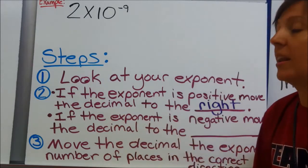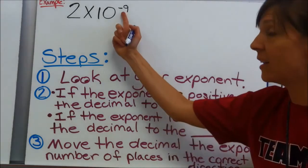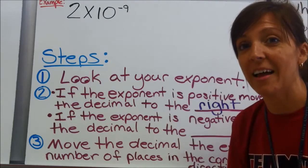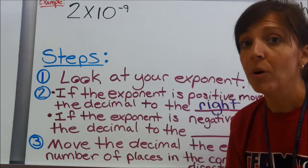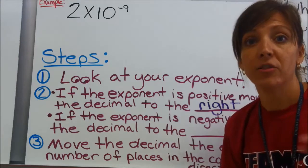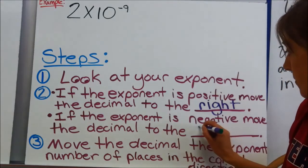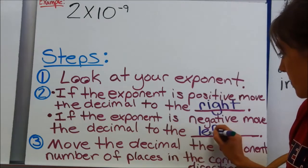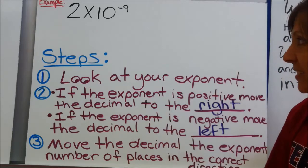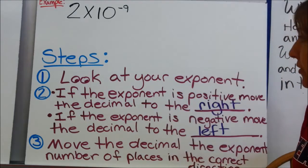If the exponent is negative, move the decimal — with a negative exponent, negative numbers are on the left side of the number line, so we will move our decimal to the left. Move the decimal the exponent number of places — which would be 9 in this case — in the correct direction.